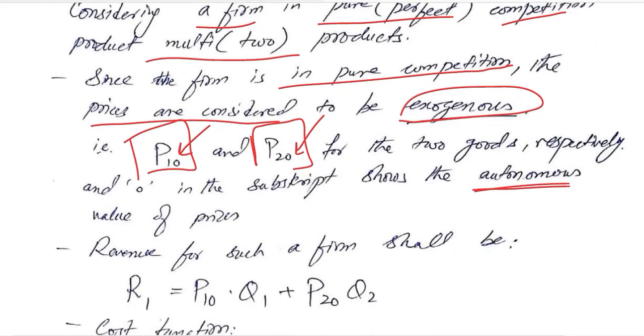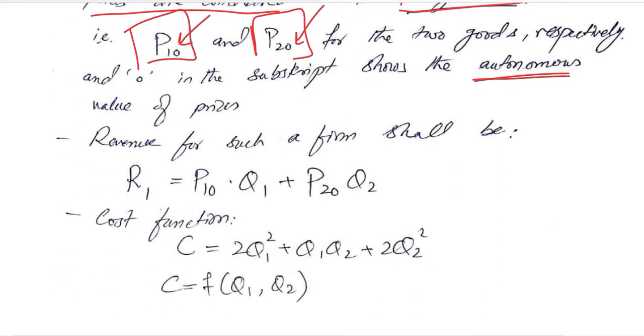After mentioning these symbols, we can now come to the revenue calculation, which is definitely the price into quantity: P₁⁰Q₁ and P₂⁰Q₂ of the first good and of the second good. This will give us the total revenue.